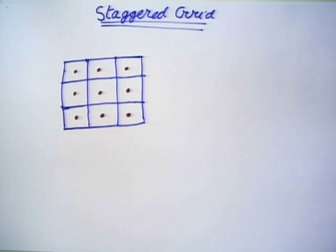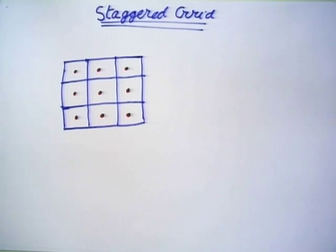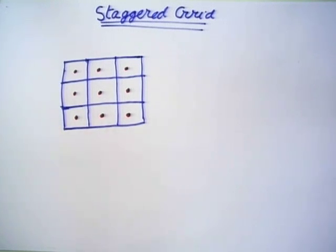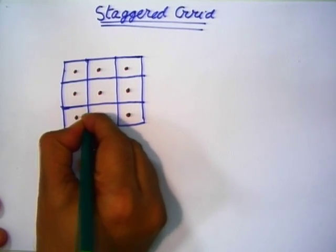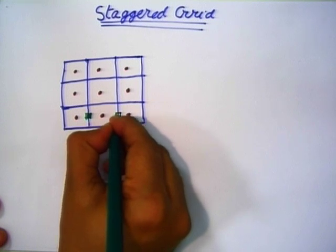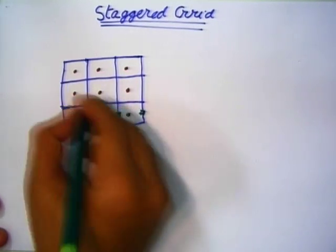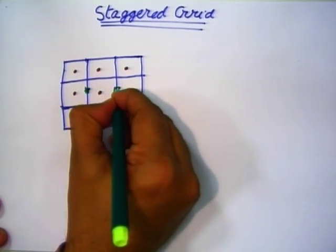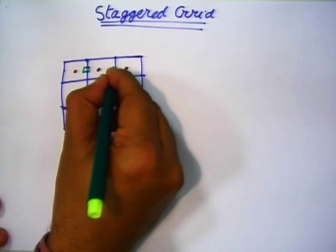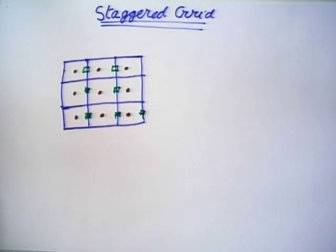These 9 grid points are used for pressure and temperature scalars only. The u-velocity grid points are located at vertical face centers and v-velocity grid points are located at horizontal face centers.